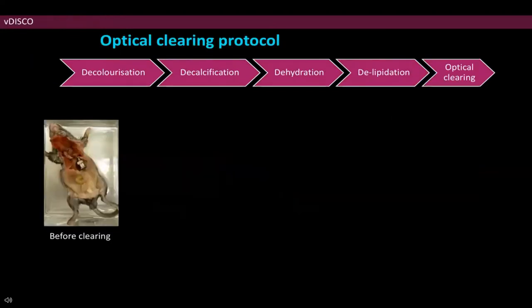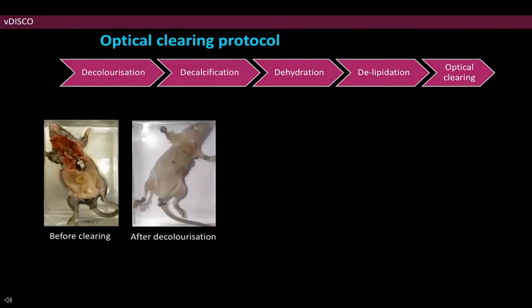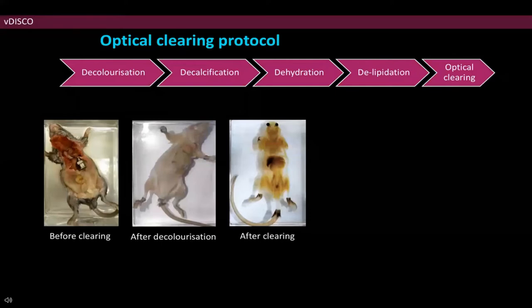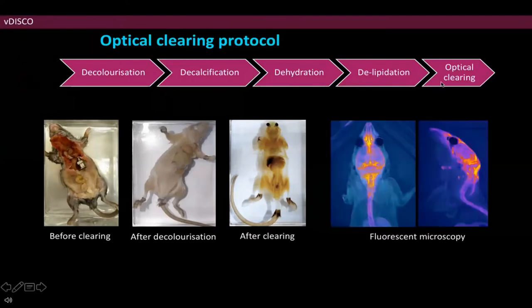If you want to clear not just organs but whole mice, you can also do this with a few additional steps using the vDISCO method, where we perform decolorization and decalcification along with our regular steps. Here we have also injected a dye in the CSF and can now see this in the whole body of the mouse.